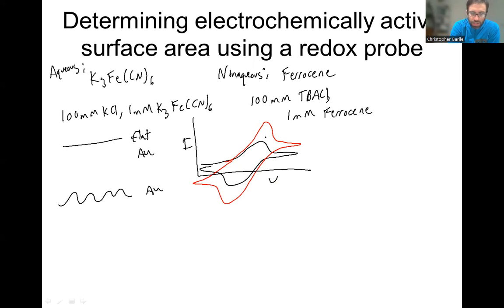The whole idea here is then you're just going to integrate the area under your bumpy peak and integrate the area under your flat peak. You can do it for both the cathodic and anodic waves and then sort of take the average.